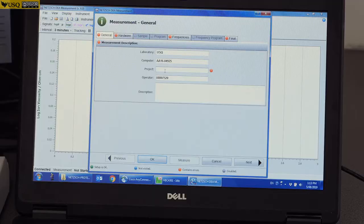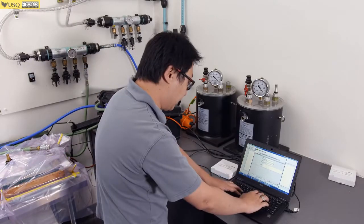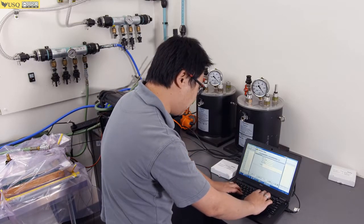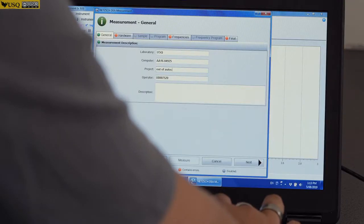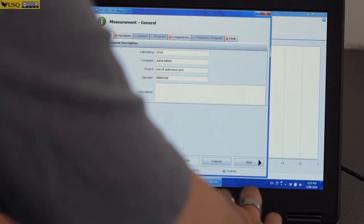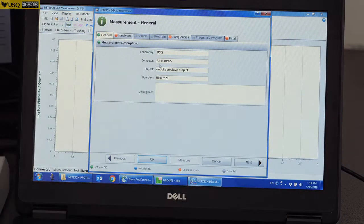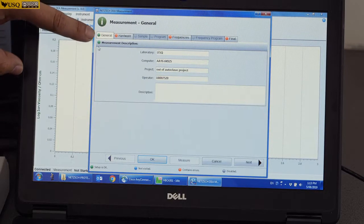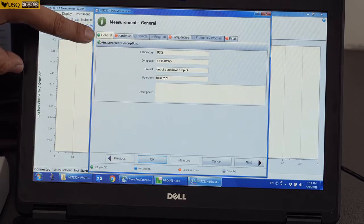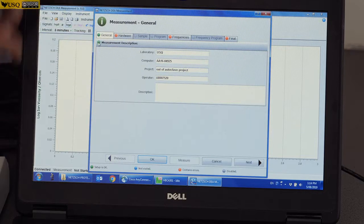Under General, we have to fill in our project. In this case, I'll put in Out of Autoclave Project. Once I fill in, you can see the round circle from red turn to green. This means it is ready.